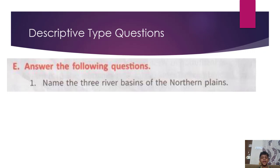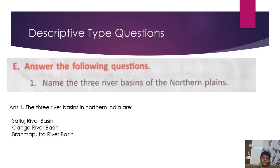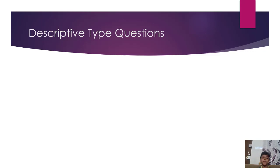Descriptive Type Questions. E. Answer the following questions. Name the three river basins of the northern plains. Answer: The three river basins in northern India are the Sutlej river basin, the Ganga river basin, and the Brahmaputra river basin.